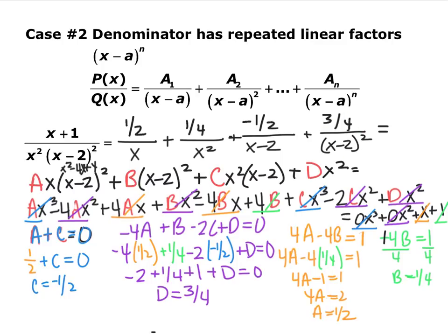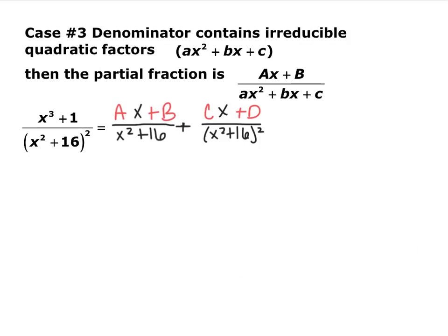So if you have repeated linear factors — a linear term raised to a power — you need to include every power of that repeated linear term, and each numerator is just a constant. Our last case: the book separates it into two, but I treat it as one — irreducible quadratic factors. For example, x squared plus 16 cannot be factored, unlike the previous cases.